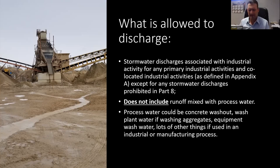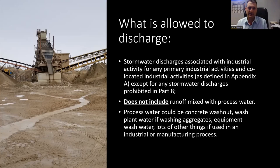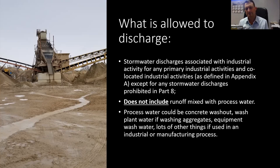You can't discharge stormwater that's mixed with process water. In the photograph on the left is a wash plant — a plant for washing aggregates, usually to use them in concrete production. You can see water running out of that wash plant on the ground. If that's mixed with stormwater and then discharges, you would be considered to be discharging your process water, which is not allowed.